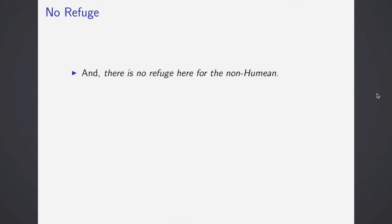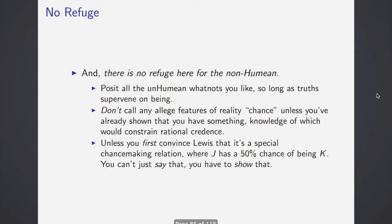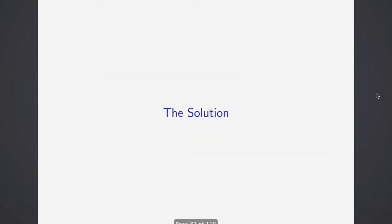And there is no refuge here for the non-Humian. David Lewis says that you can posit all the un-Humian whatnots you like, so long as the truth supervenes on being. Don't call any of these alleged features of reality chance unless you've already shown that you have something, knowledge of which would constrain rational credence. And unless you first convince him that it's a special chance-making relation where J has a 50% chance of being K, you can't just say that, you need to show that which David Lewis thinks he can do. So let's move to that solution.